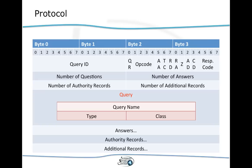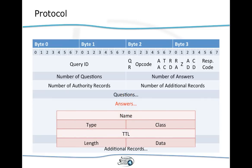Queries contain a query name, a type, and a class. For example, if looking up the A record for isc.sans.edu, the query name would be isc.sans.edu, the type would be A, and the class would be IN for internet.